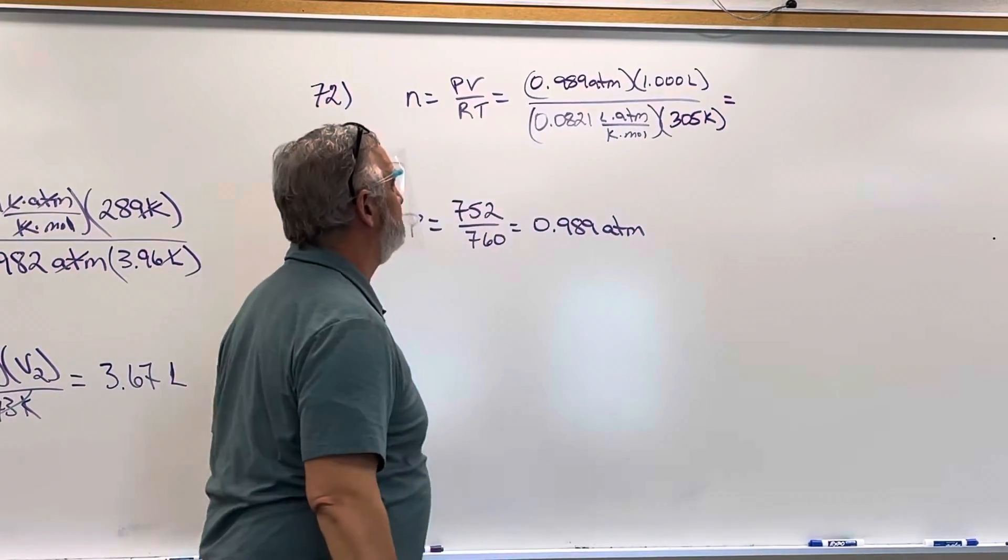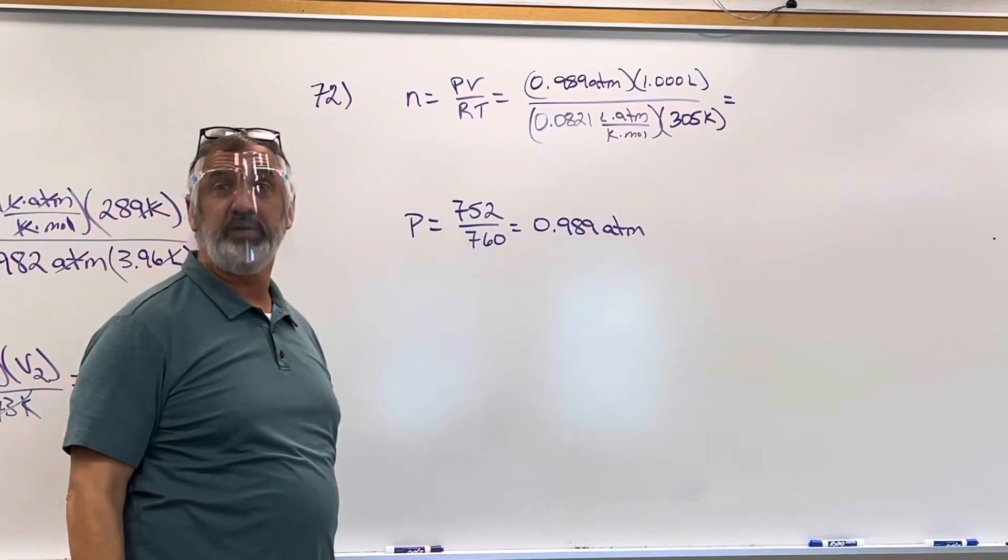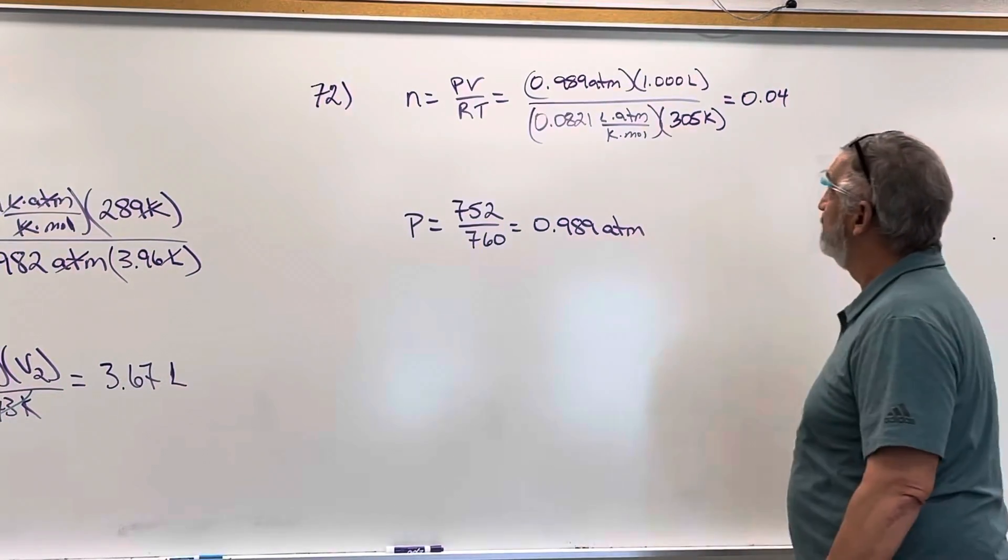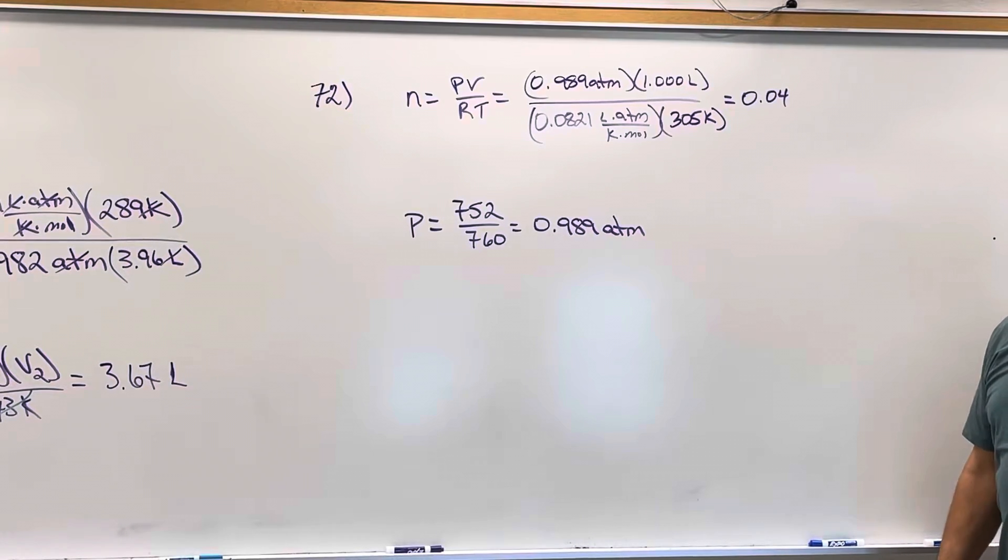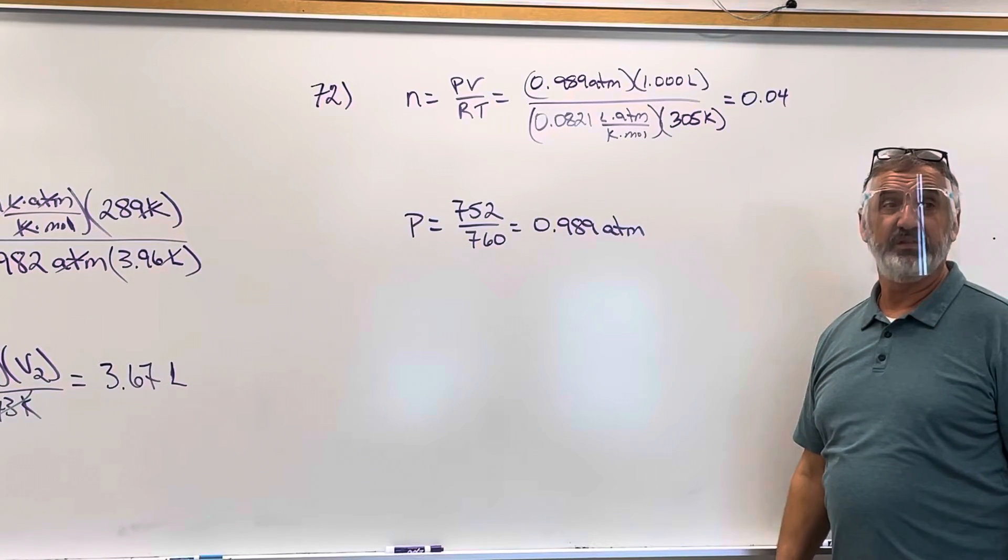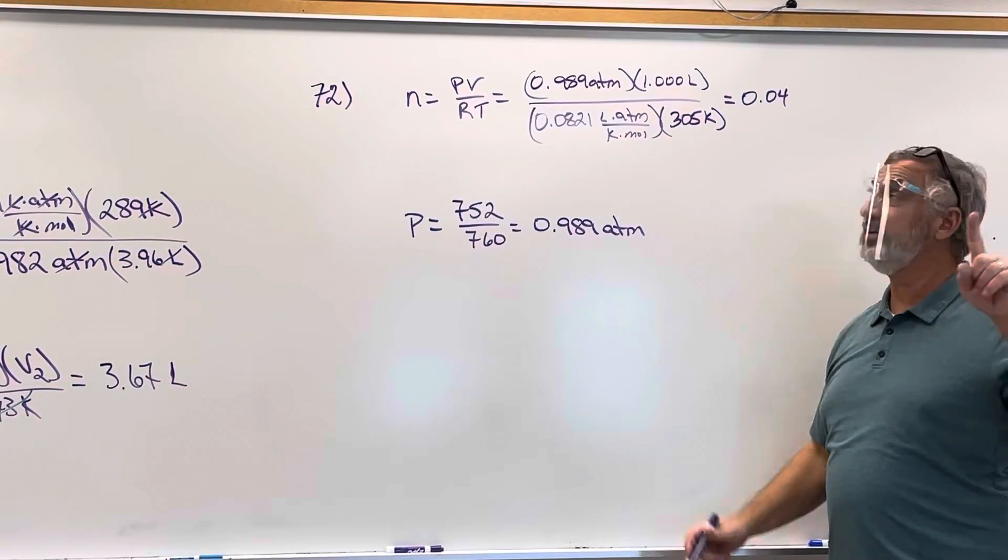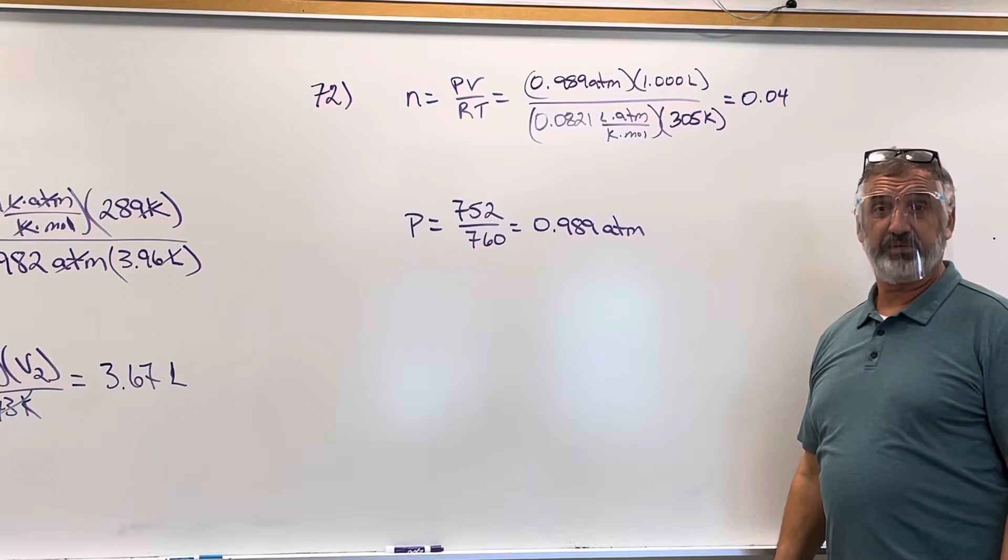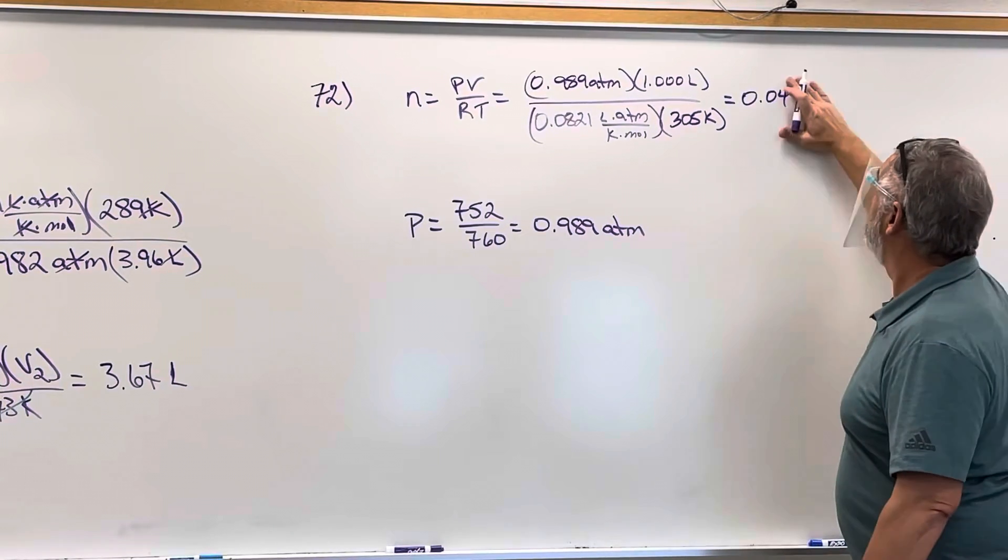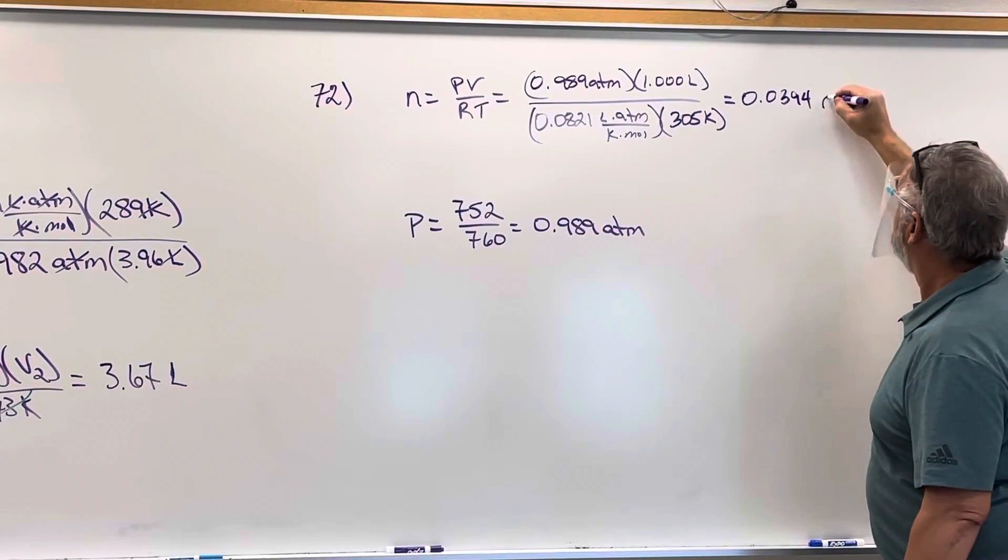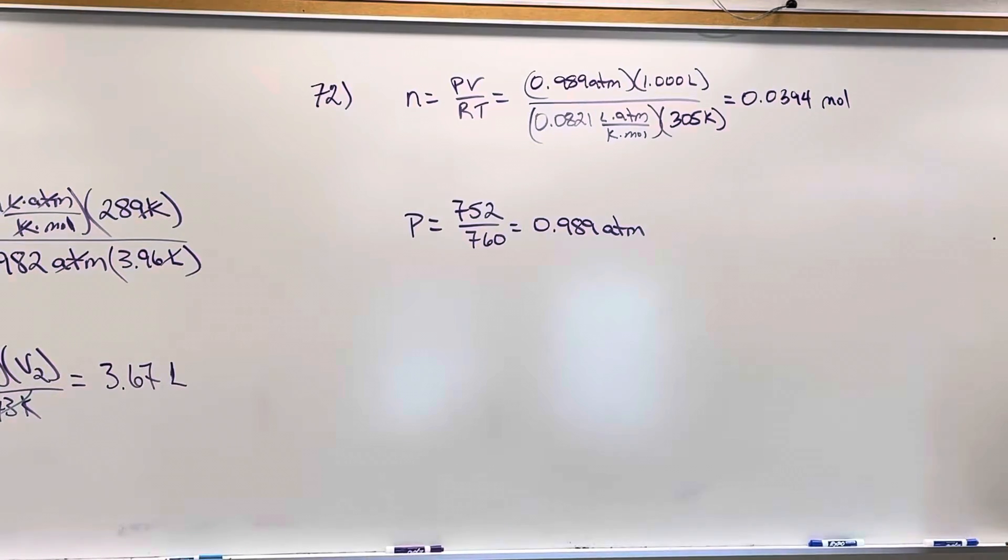So moles equals 0.0394. But how many sig figs do I have? I have 3, I have 3, so my answer should have 3. 0's at the beginning of a decimal are not significant. So three sig figs, 0.0394 moles.